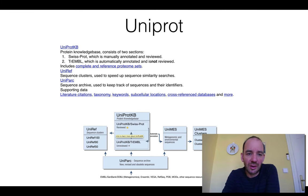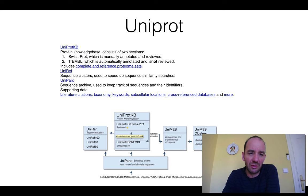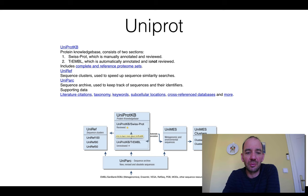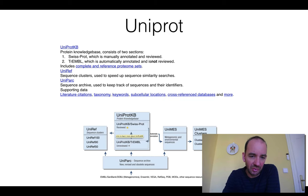UniProt also includes reference datasets like UniRef, which are sequence clusters. UniRef100 contains one cluster per set of identical sequences. UniRef90 contains clusters where all proteins are 90% or more identical, and so on. There is also UniParc, a sequence archive that keeps track of all sequences.